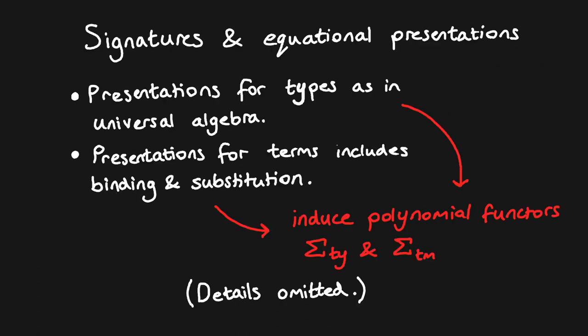We're not going to look at signatures and equational presentations for simple type theories in depth, because I want to focus on the models. In brief though, the typical natural deduction rules for type formation, introduction, elimination and computation can be described formally by signatures and equational presentations, similarly to those in universal algebra, but which additionally capture typing and binding information. These signatures induce polynomial functors, whose algebras will form part of the structure of our models. We'll look at an example in more depth later, but for now I want to move on to describe the structure of the models of simple type theories.